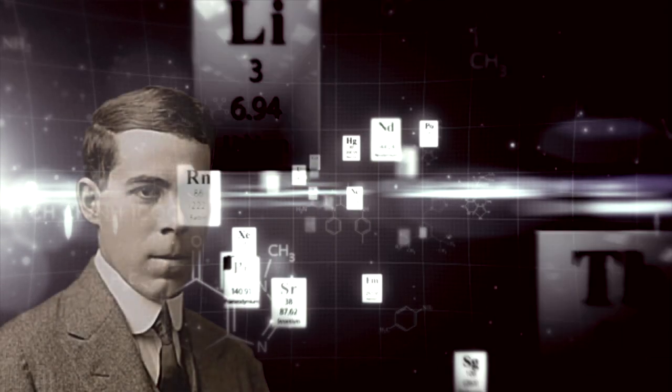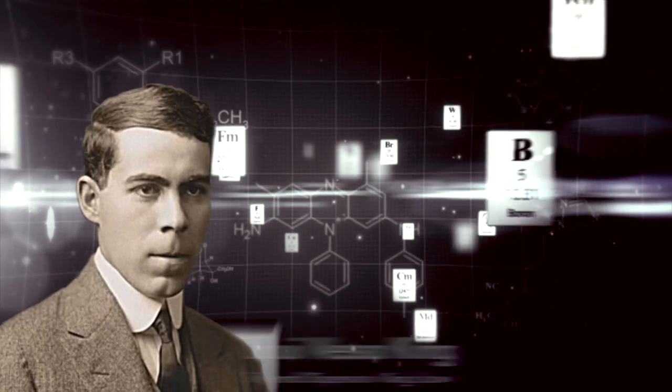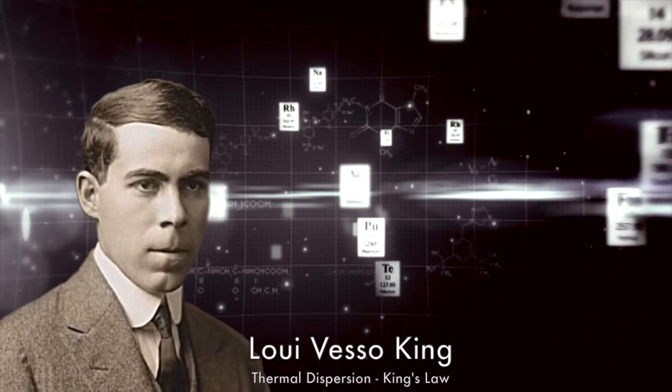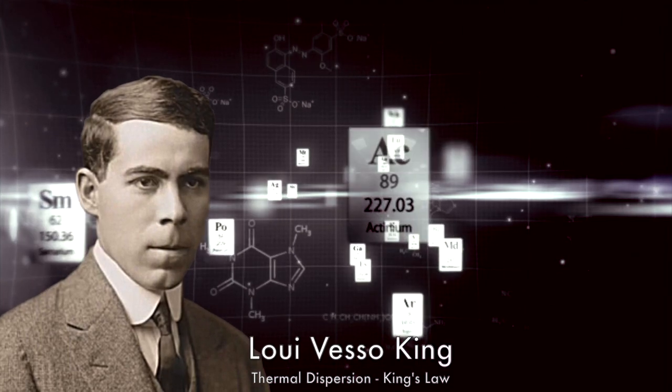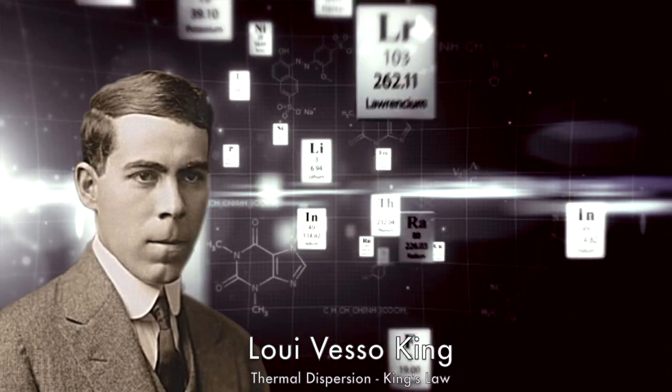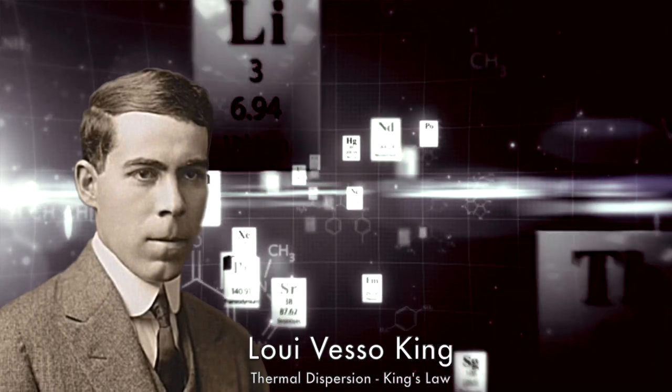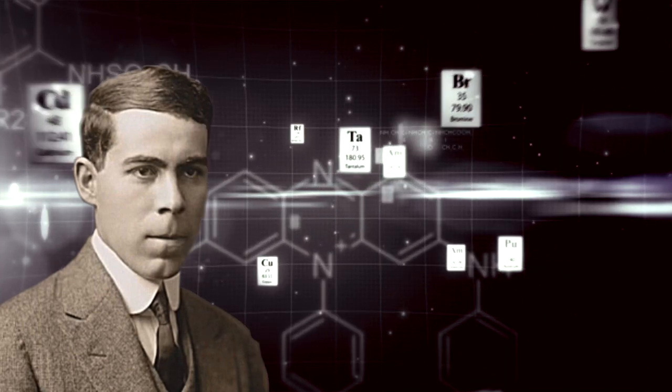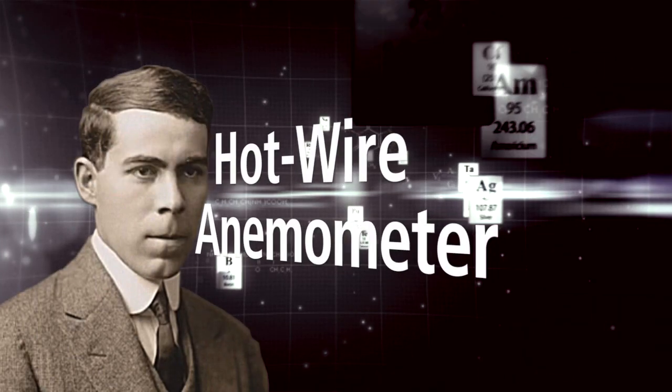The basic physics of thermal dispersion mass flow meters is attributed to Louis Vesso King, who in 1914 published his famous King's Law, mathematically describing heat transfer in flows, using a heated wire immersed in a fluid flow to measure the mass velocity at a point in the flow. King called his instrument a hot wire anemometer.